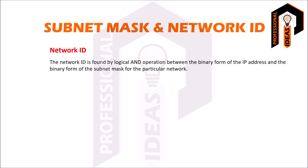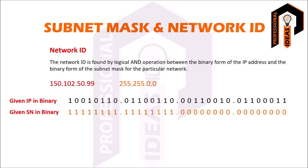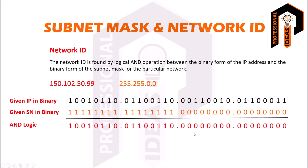For example, let's pick a random IP address like 150.102.50.99. As you can see, it is a Class B network, so its default subnet mask will be 255.255.0.0. By converting the given IP and default subnet mask to binary we get these values. The AND logic operation returns a true value only if all of its inputs are true; if any input is false, the output is also false.